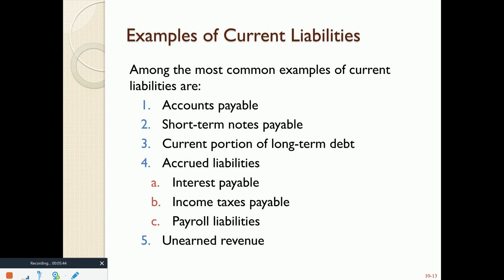Here are some examples of current liabilities. You'll always see accounts payable at the top of the list, then short-term notes payable, and the current portion of long-term debt — for example, any mortgage principal amounts due in the next year is the current piece, and the rest is the long-term piece. Accrued liabilities are those adjusted at the end of the period, such as interest payable, income taxes payable, and payroll liabilities. And of course, there's unearned revenue — the customer deposit — which is when your customers pay you beforehand before you do any work. That needs to be either paid back or you need to provide the promised good or service.